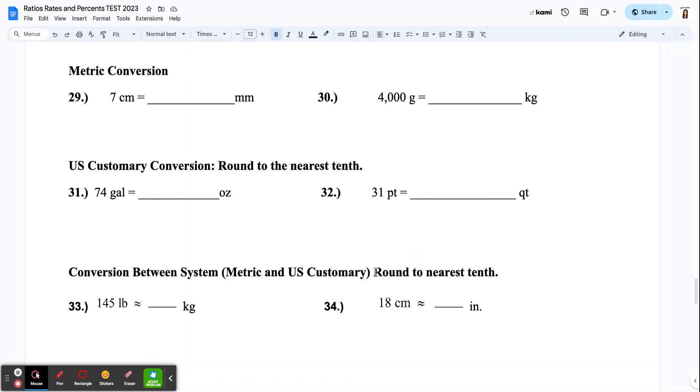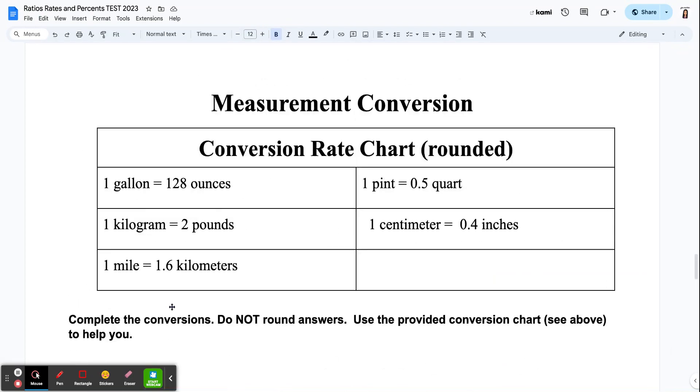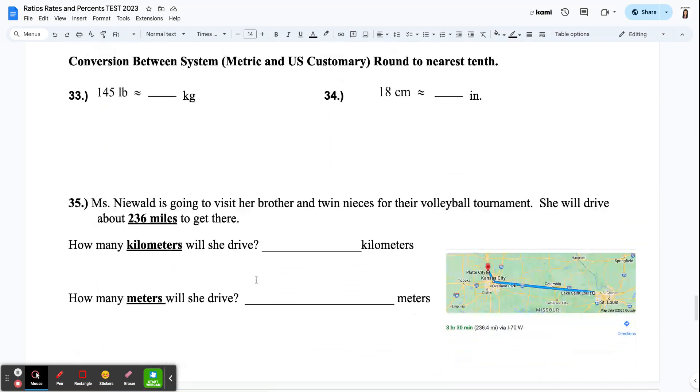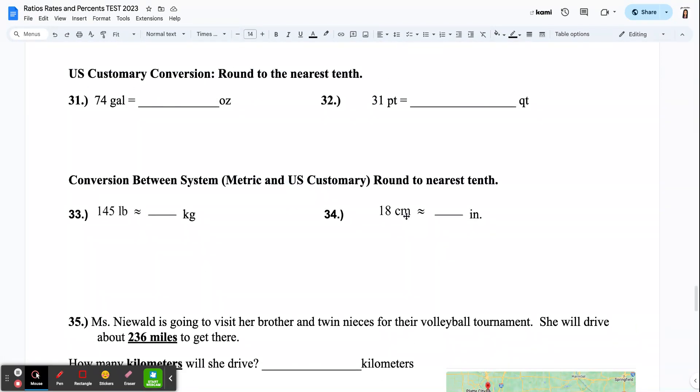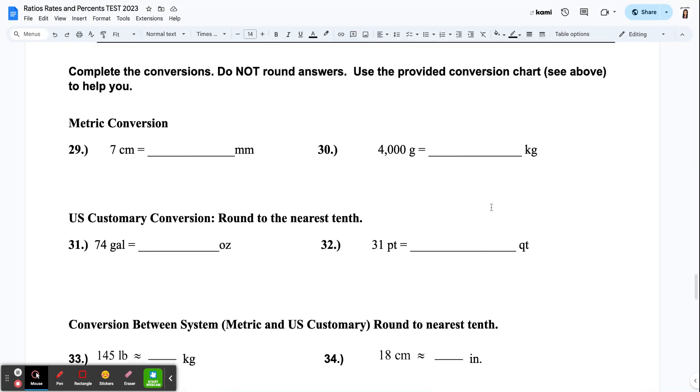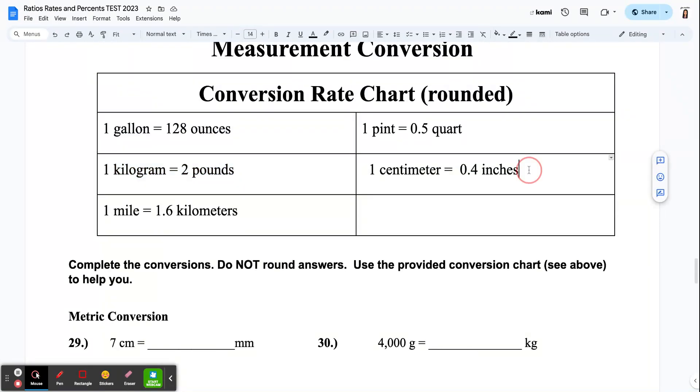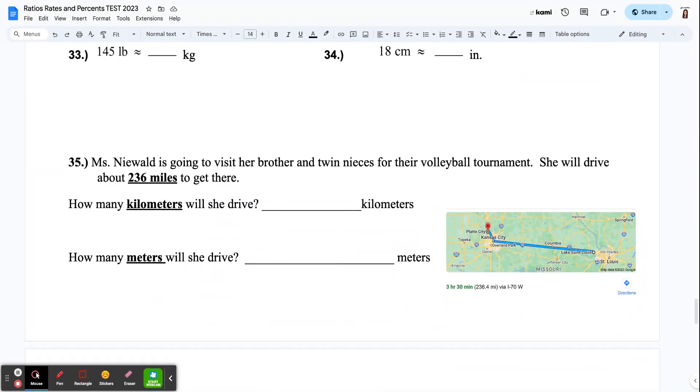So these little squiggle lines mean roughly. It means about. It means that you're going to end up rounding. So it's a rough estimate. So look for pounds and kilograms up here. I have pounds and kilograms, and I'm going to use that to answer. On the next one, 18 centimeters, that's metric, equals how many inches? Inches is a U.S. customary unit. I'm going to look up here for inches and centimeters and use this to help me answer.